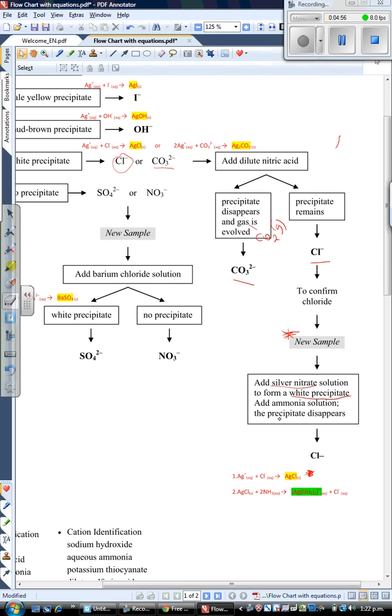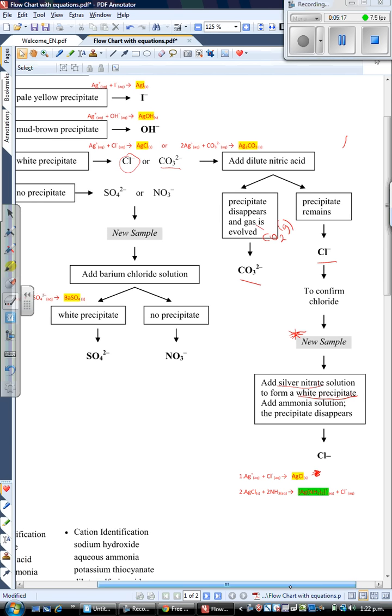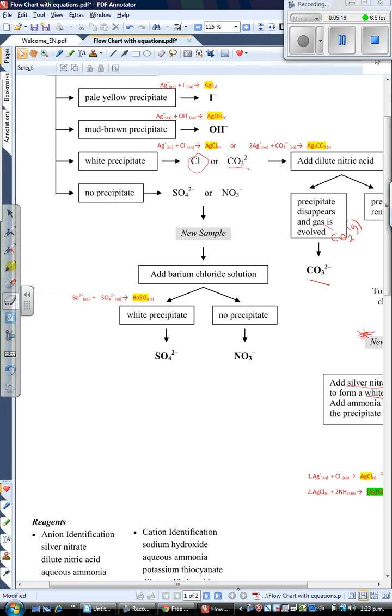The second thing you do is add ammonia, and the precipitate disappears. If precipitate disappears, that's evidence of a complex ion forming. That is the equation there: silver chloride white precipitate plus ammonia aqueous solution gives you two ammonias joined onto the silver. This is the only complex ion you're going to come across with your anion identification.